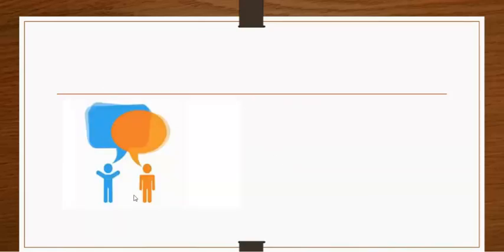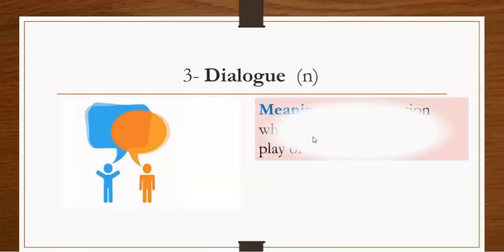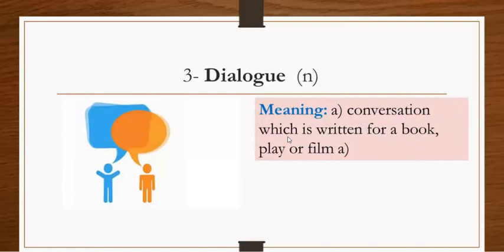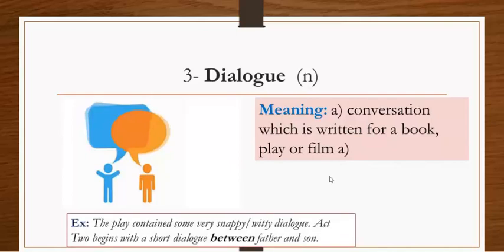Number three. From this picture you see two persons talking with each other. This is called dialogue. It's mainly a noun, and the meaning is a conversation which is written for a book, play, or film. The opposite of dialogue is monologue, when the actor is talking directly to the audience. Example: The play contains some very snappy and witty dialogue. Act two begins with a short dialogue between father and son.